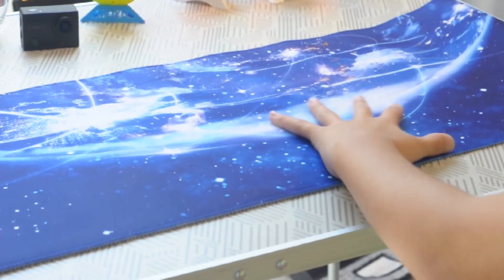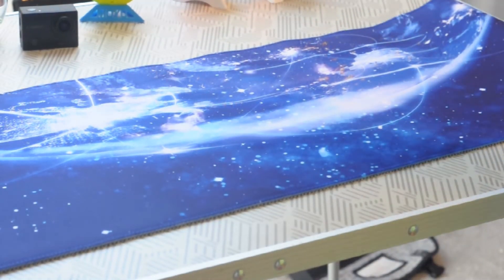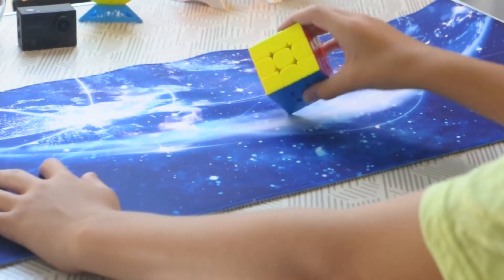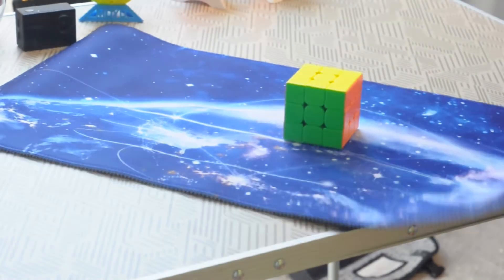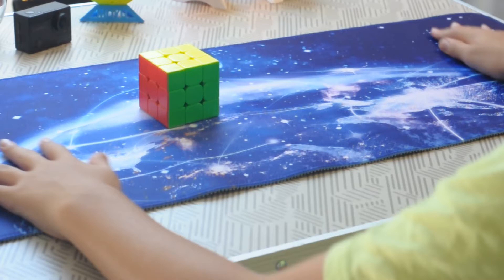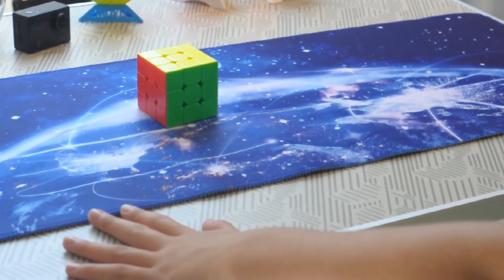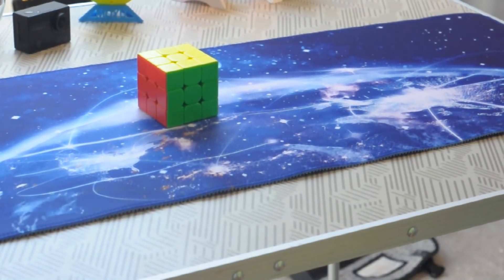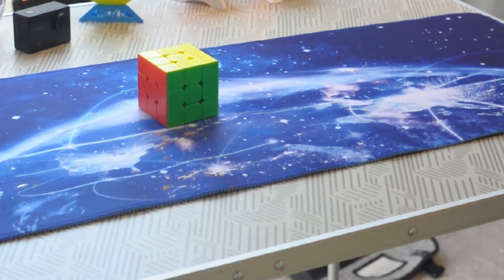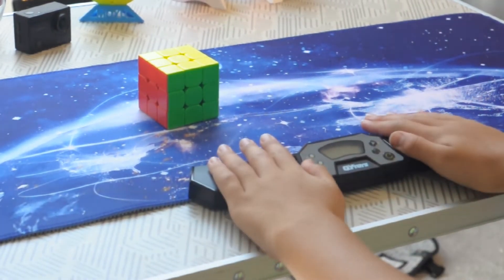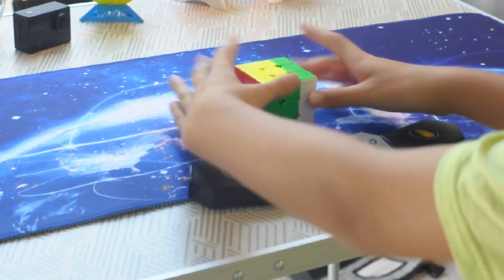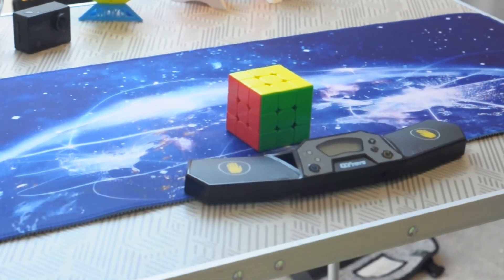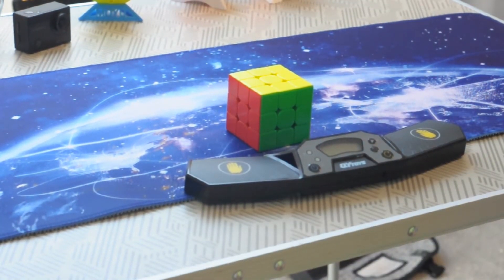You can see it's very good. Let's drop the 3x3 - it doesn't do much damage. Let's turn it the right way around. It looks really good. This is a good way to do a budget cube setup with a timer and mat like this.